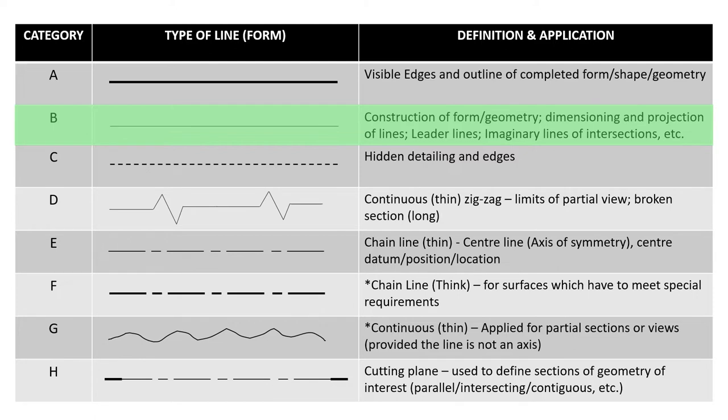The construction line is also used in other applications too. When it comes to assigning dimensions to given forms or shapes, projection of lines, particularly when it comes to orthographic projections, leader lines, imaginary lines for intersection and things like that, this is basically the line type that we normally use.